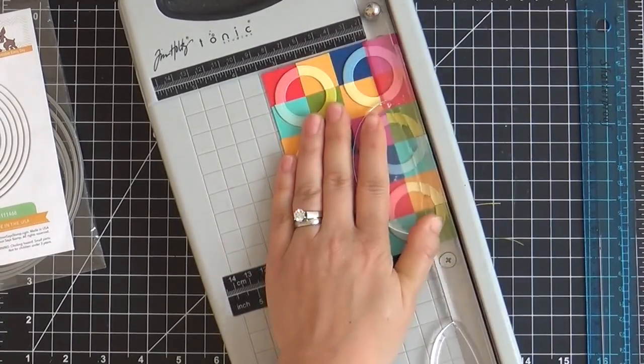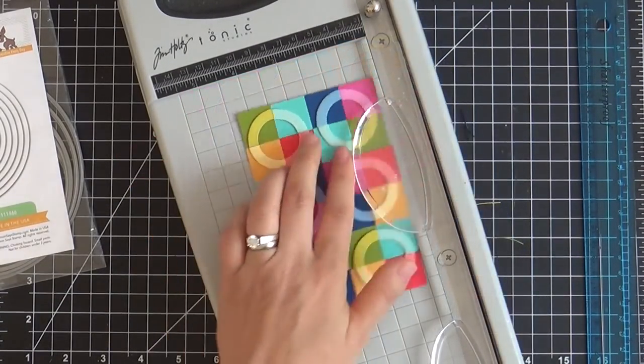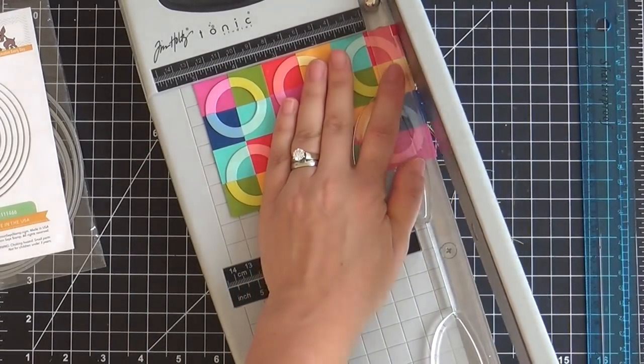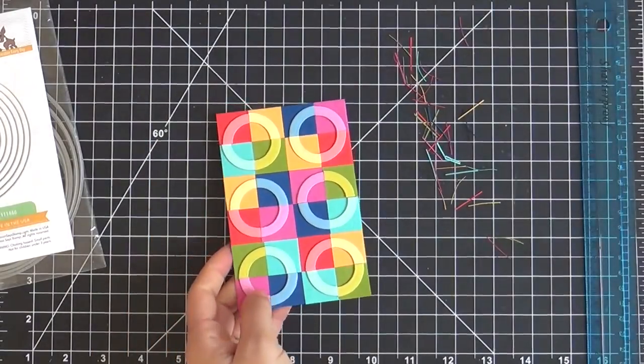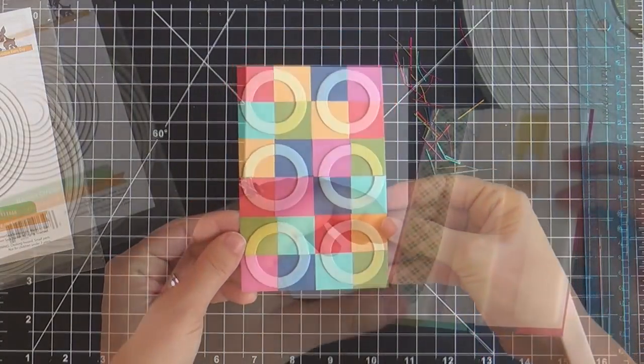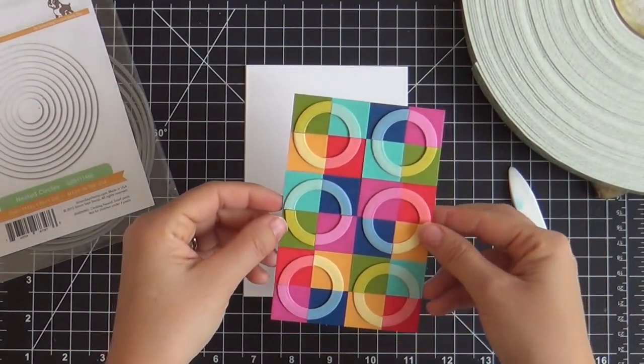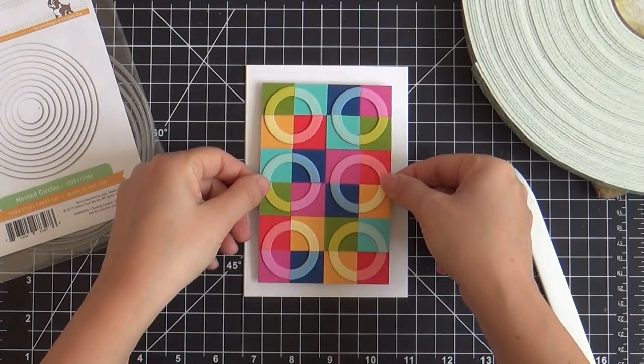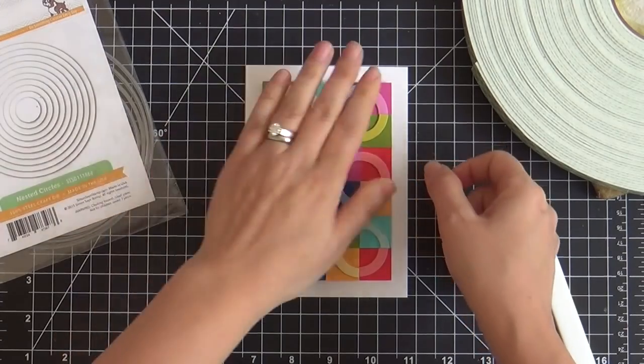As the teeny boppers say nowadays, this is my jam. This is the sweet spot for old Laura Fedora. So I'm trimming up the edges on that panel. I'm gonna cover the back with a little foam tape and pop it up on a nice white card base. I like to give a little nice white edge to frame it just so.